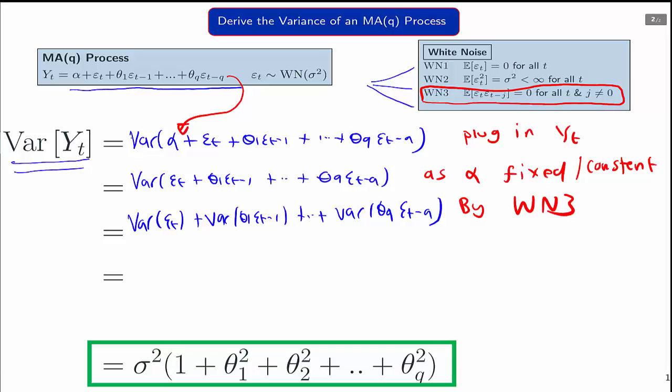Finally, we can use the properties of the variance again. All these theta 1 to theta Q will come out squared, because the variance of a constant times a random variable means the constant comes out squared. So we're using the basic properties of the variance function. It will be useful to recap your notes on this if you're not too familiar with it.